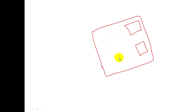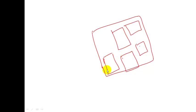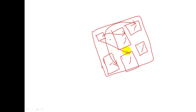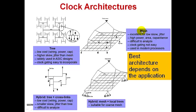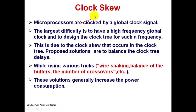A chip may have digital parts, peripherals, controllers, and communication interfaces in different regions. All of these work with the clock from one source, but the clock signal reaches each module at different times. This is the main reason for clock skew.